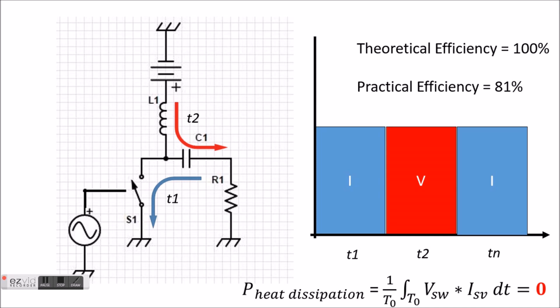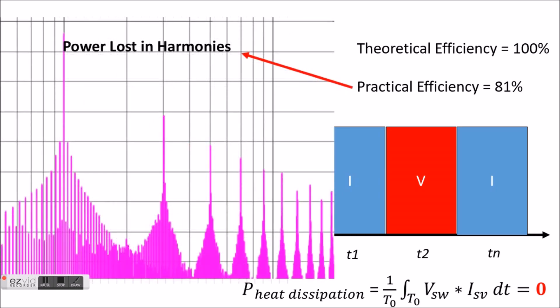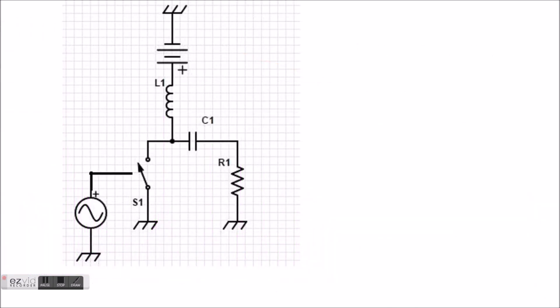But in reality, the best we could obtain from this arrangement is 81% as most of the power is lost in the intermodulation and harmonic frequencies. Not all power is being transmitted through the fundamental. So how could we improve this?